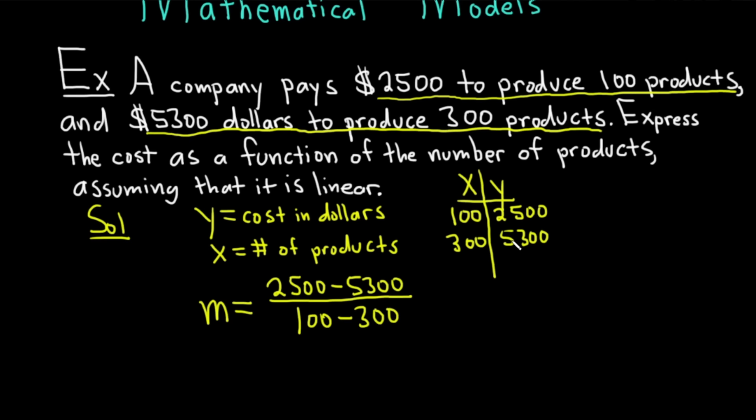You can certainly do it backwards. You can do 5,300 minus 2,500, but then on the bottom you would have 300 minus 100. And you'll get the same answer. So just basically it has to match. So we did 2,500 minus 5,300, and then 100 minus 300. The change in y over the change in x. That's the slope.